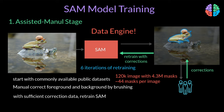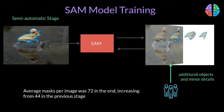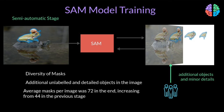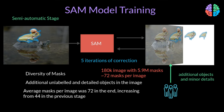The second semi-automatic stage focuses on improving the diversity of the SAM model. To improve diversity, annotators were asked to label additional unlabeled objects that were much more detailed in the image, so it took longer to label. By the end of this stage, they had labeled 180,000 images with 5.9 million masks. Similar to the first stage, they did periodic retraining but only five times. The output masks per image increased from 44 to 72 by the end of this stage.